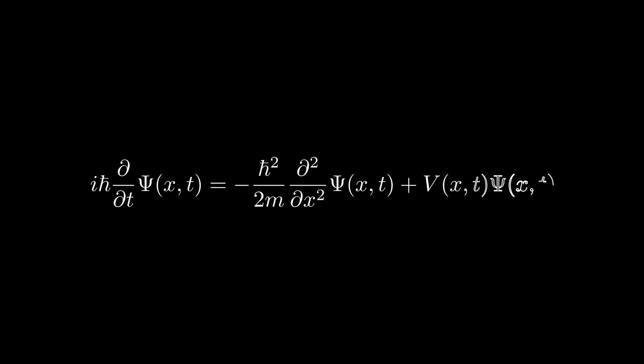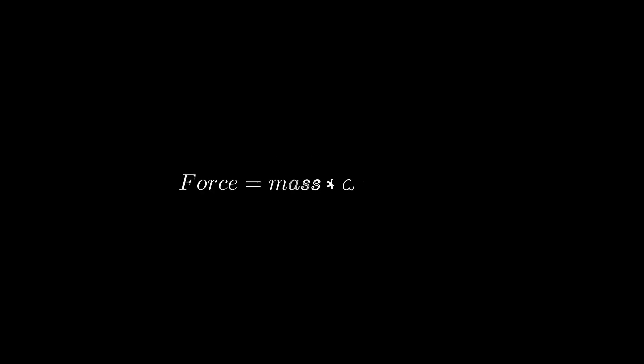Schrödinger's equation is to quantum mechanics what Newton's second law F=ma is to classical mechanics. In classical mechanics, we can obtain the trajectory of an object by solving force equals mass times acceleration, where we represent acceleration as the second derivative of position.